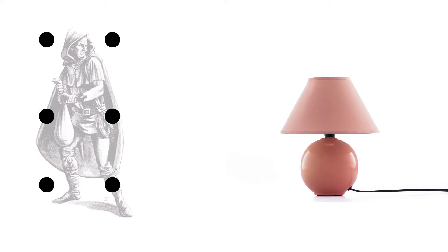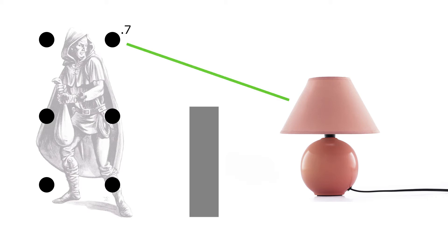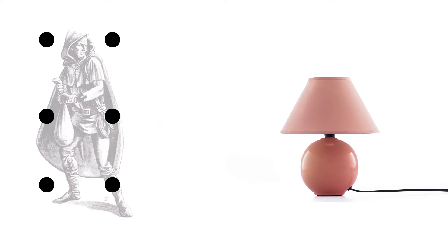Every couple frames, the light detection targets take turns raycasting to each light in range. If the light is not blocked by anything, the light detection adds the visibility of that light — a product of the light's intensity and how far it is from the player — to the player's total visibility score, which is scaled from 0 to 1.